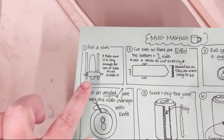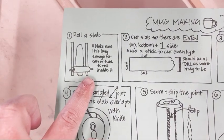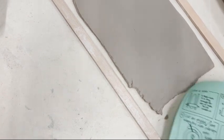The first step to hand building a mug is to roll a slab. You want to make sure that it's long enough for a can or a tube to roll all the way around it. I've already done this, so that's step one.